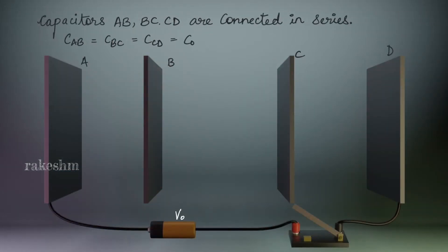Firstly, we can consider AB, BC, and CD as three capacitors, and these three capacitors are connected in series. Let us assume the capacitance of each is C0. The effective capacitance of these will be C0/3. Now let us close this switch.